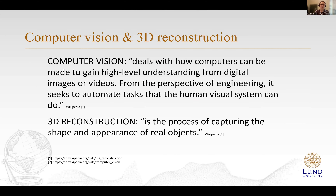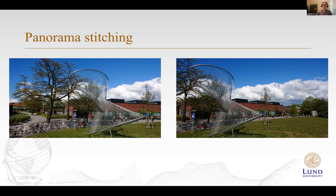To get us all starting on the same page: computer vision deals with how computers can be made to gain high-level understanding from digital images or videos. From the perspective of engineering, it seeks to automate tasks that the human visual system can do. Building 3D reconstructions is a type of computer vision — a 3D reconstruction is the process of capturing the shape and appearance of real objects. Before going into 3D reconstruction, I want to take a step back and talk about panorama stitching, which is about taking two or more images and stitching them together into a larger image.